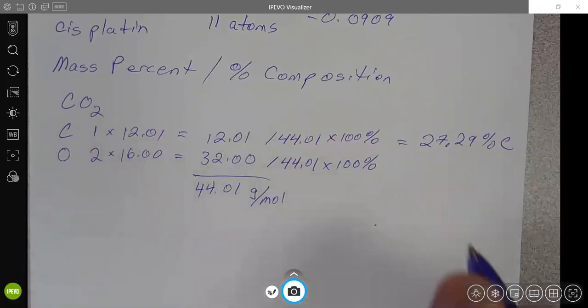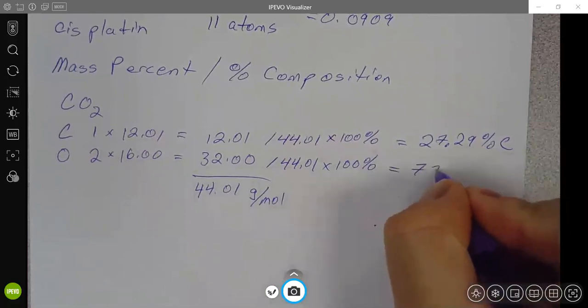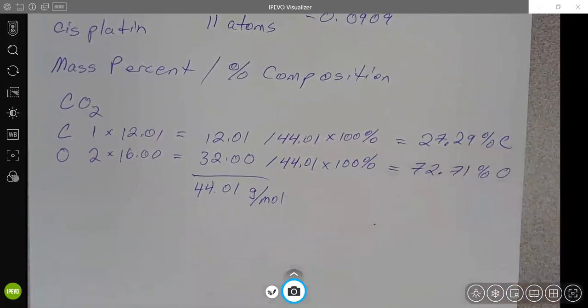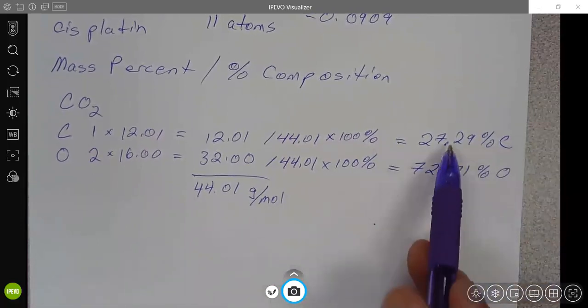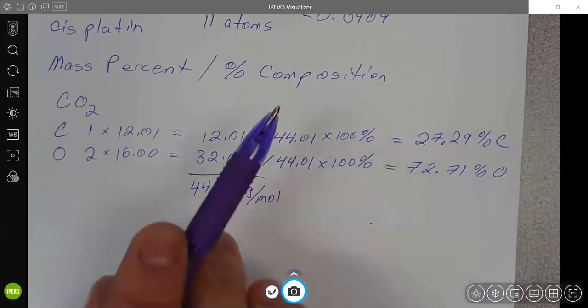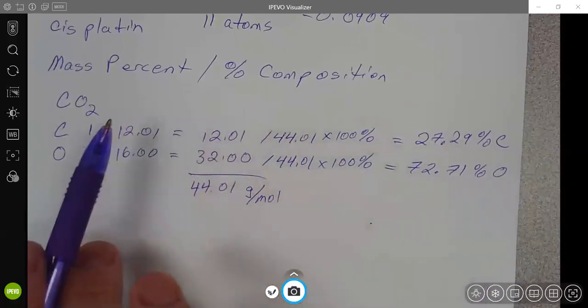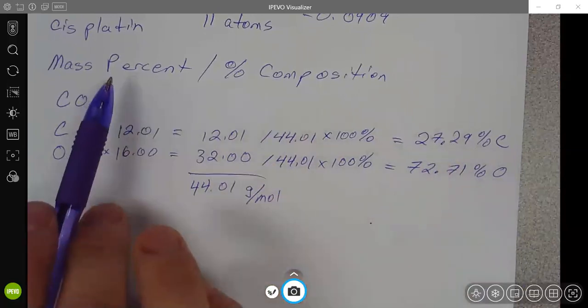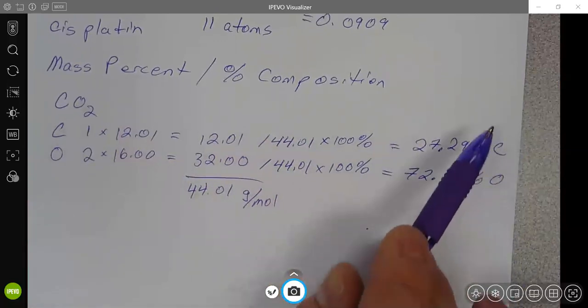If you go through and you do the same calculation then for the oxygen and take the 32 divided by 44.01 times 100, you get 72.71 percent oxygen. Both of these values together would be the percent composition of CO2.